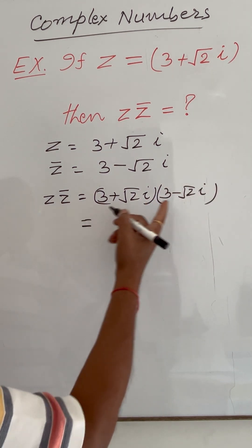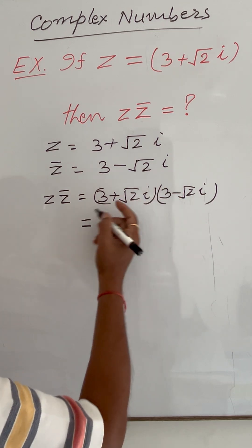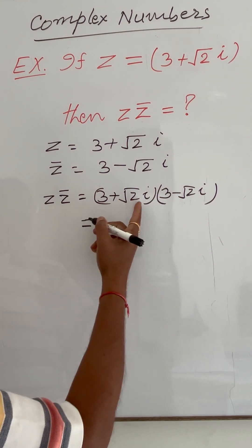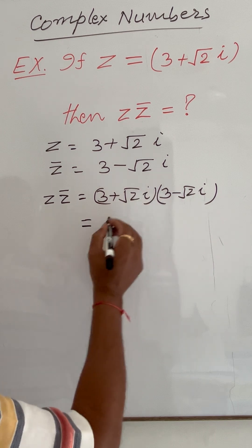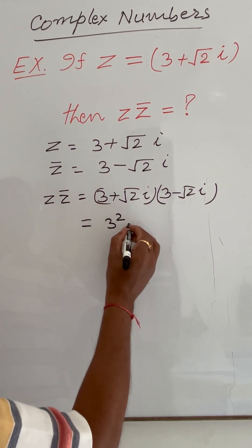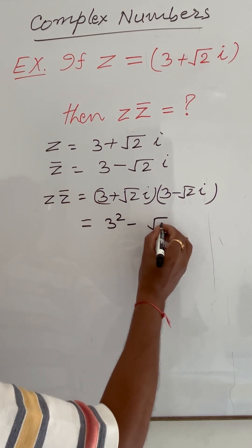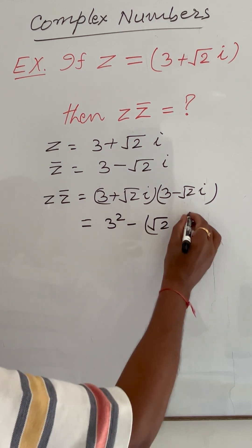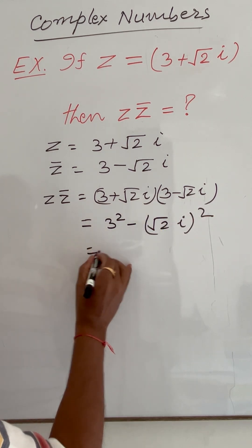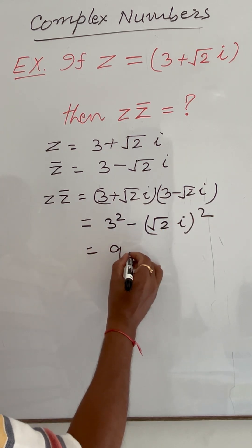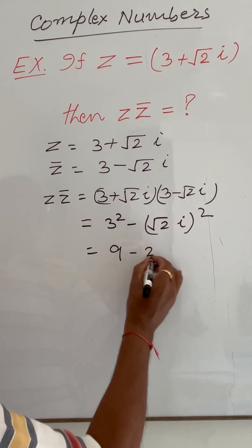We have to multiply these two factors. This is in the form (A + B)(A - B), which equals A² - B². So 3² minus (√2i)² whole square, where 3² = 9.